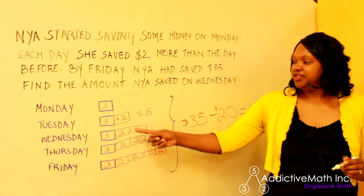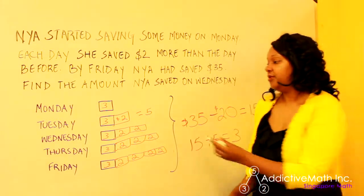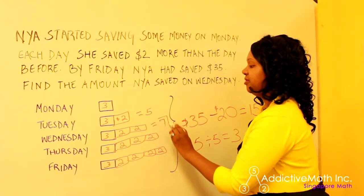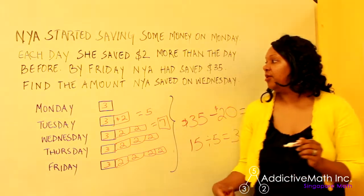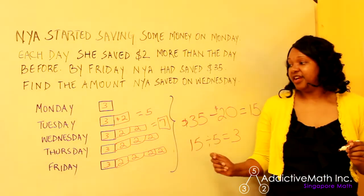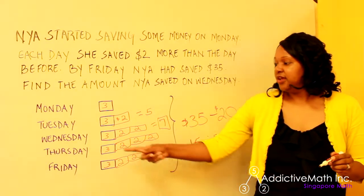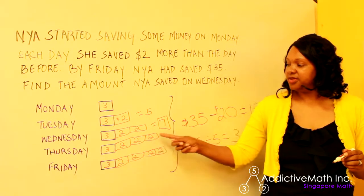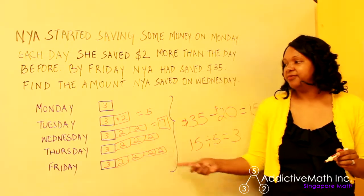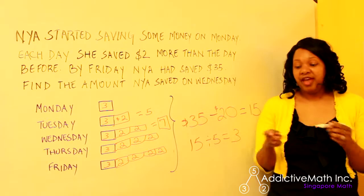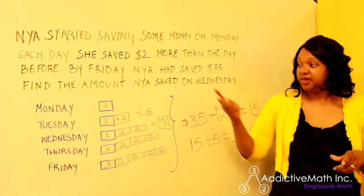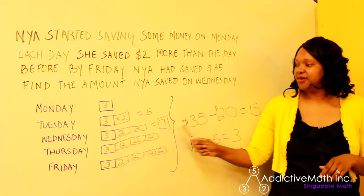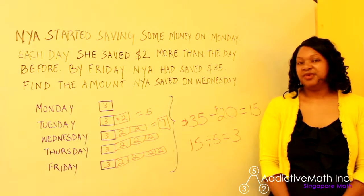On Tuesday, we had $3 plus $2, so that would be $5 that she saved on Tuesday. On Wednesday, $3 plus $2 plus $2, or $3 plus $4, is $7 — which is what we were looking for. What did she save on Wednesday? $7. And then Thursday: $3 plus $2 plus $2 plus $2, the same pattern with Friday. So now we know what she saved on each of the days, and our answer is $7.